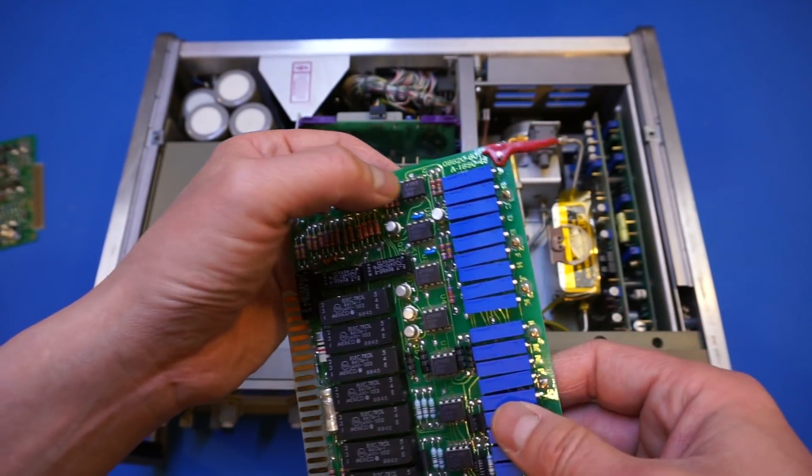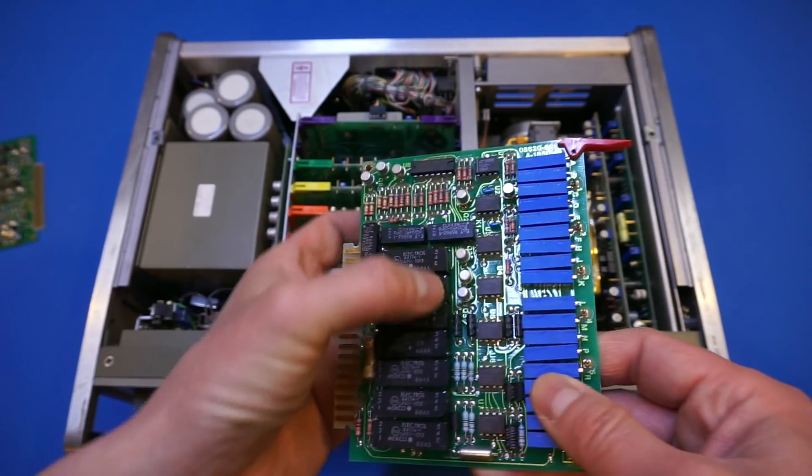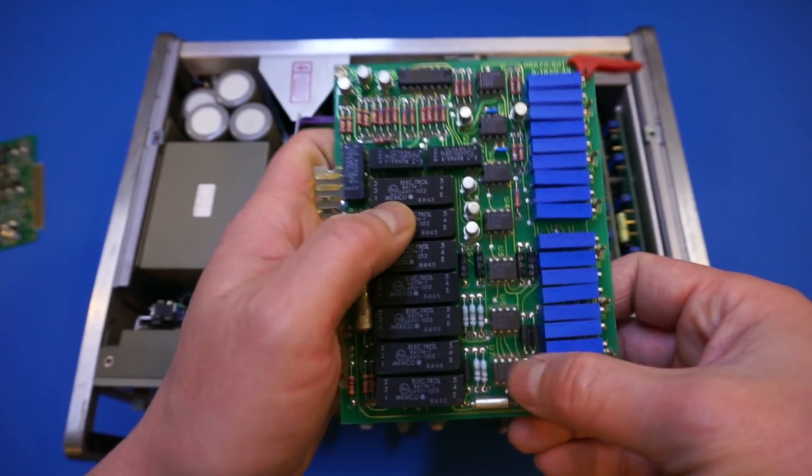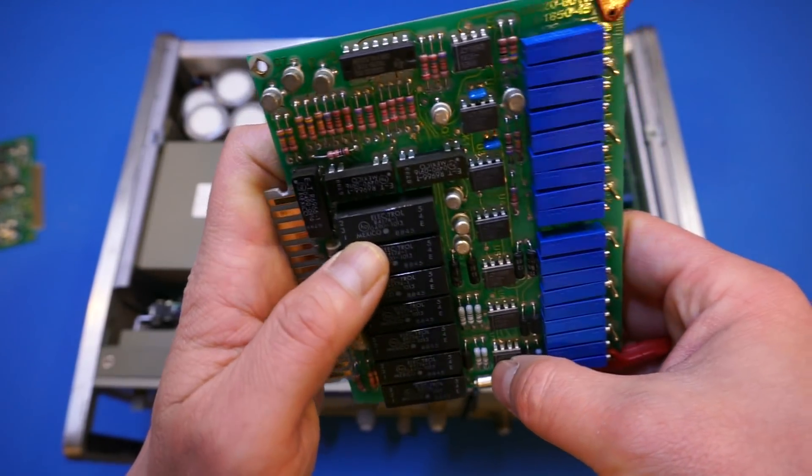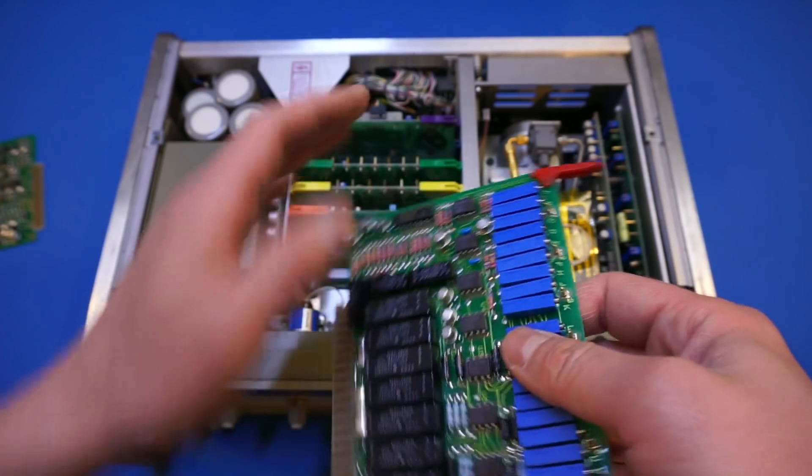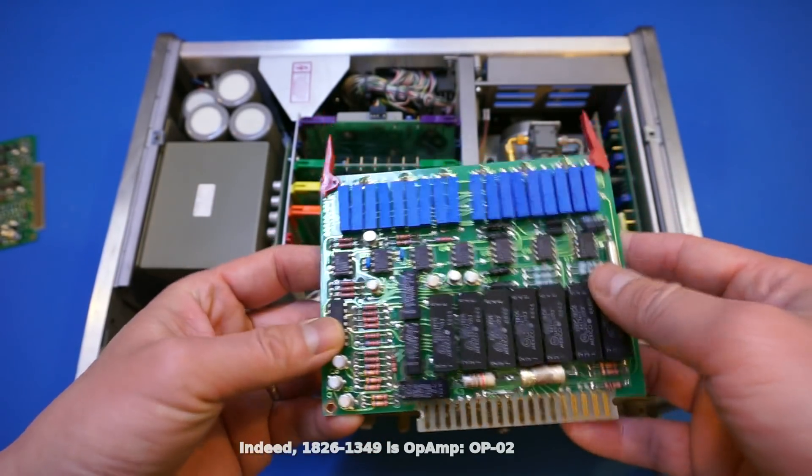And we have all these trim pots here for fine adjustments. Again, all these LT parts here are, feels like ceramic. Maybe they're not ceramic. These are actually just, this could be ceramic too. But anyway, so these are probably op-amps, I'm guessing here. And that's the second board.